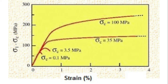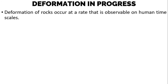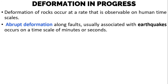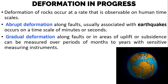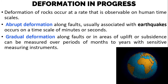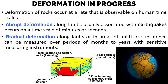This graph shows the relationship between confining pressure and strain. The y-axis is the amount of pressure to deform a material measured in MPa, and the x-axis is the amount of strain or deformation. Only in a few cases does deformation of rocks occur at a rate observable on human timescales. Abrupt deformation along faults, usually associated with earthquakes, occurs on a timescale of minutes or seconds. Gradual deformation along faults or in areas of uplift or subsidence like subduction can be measured over periods of months to years with sensitive measuring instruments.